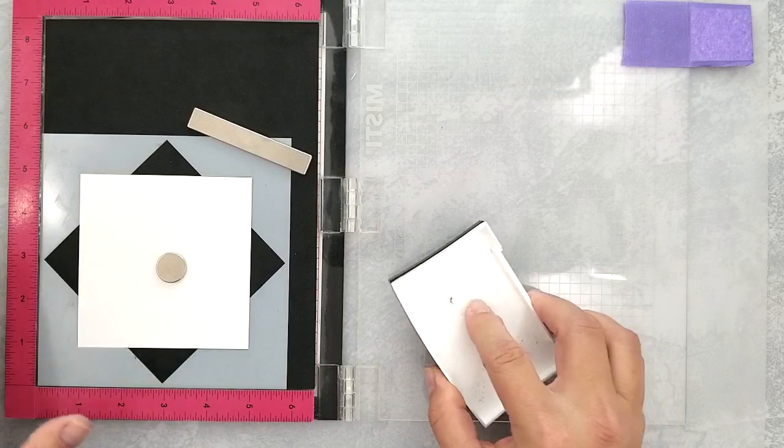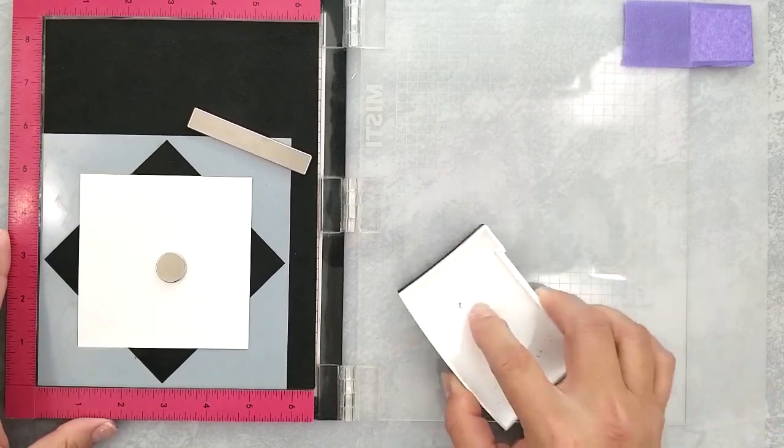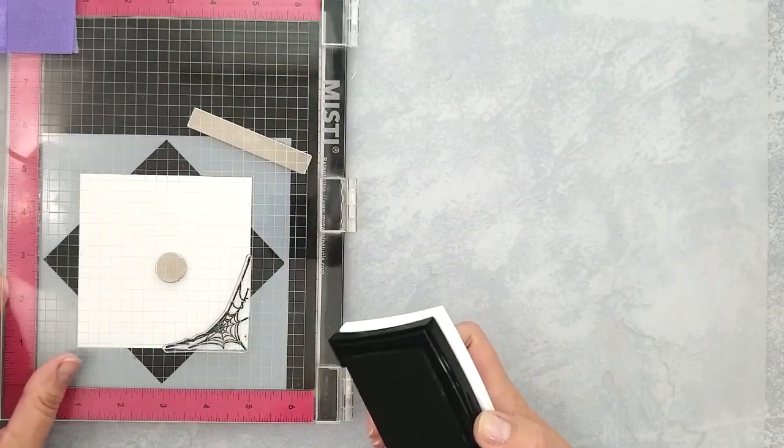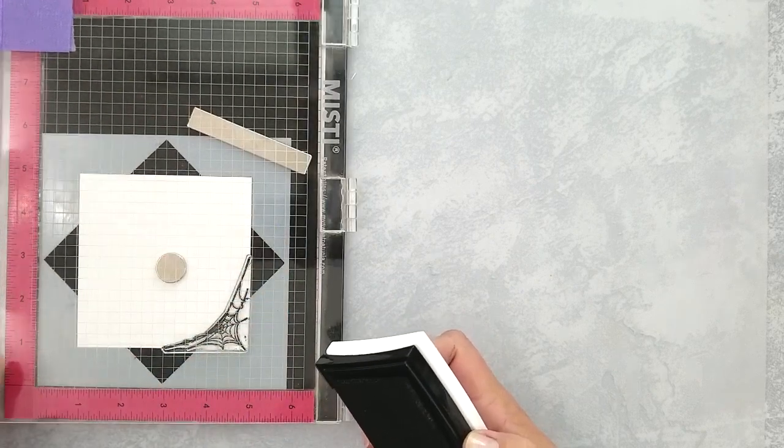Next, I'm going to use a wreath builder and stamp this corner cobweb. You don't need a wreath builder for this, but it just makes things a little bit easier.